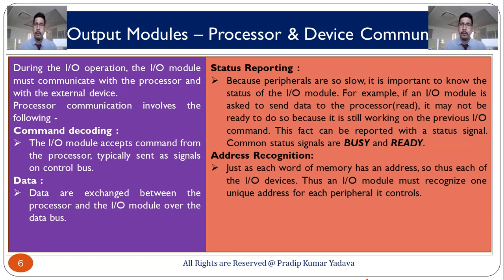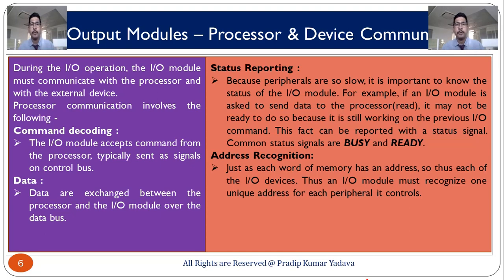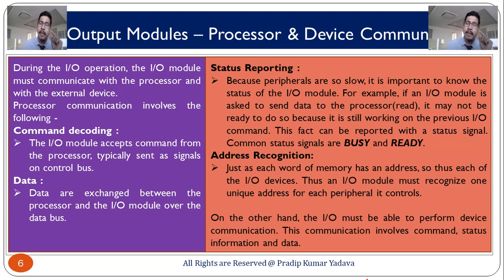Now talking about address reconciliation: just as each word of memory has an address, so does each of the input-output devices. An input-output model must recognize one unique address for each peripheral it controls. If we connect 5 to 6 peripheral devices to the microprocessor, each peripheral device will have a unique address, and by that unique address the microprocessor recognizes which peripheral device it needs to work with.